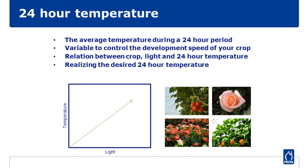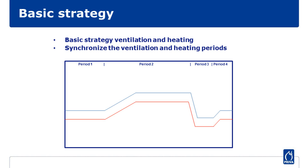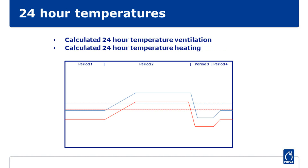Depending on the state of your crop and the amount of light, you, as the grower, will have a desired daily temperature. The 24-hour temperature regime helps you to achieve this desired temperature. You control the temperature in your glasshouse with a ventilation and heating strategy. The graph shows an example of such a strategy spread over four periods. For the daily temperature control, it is recommended to align the ventilation and heating periods.